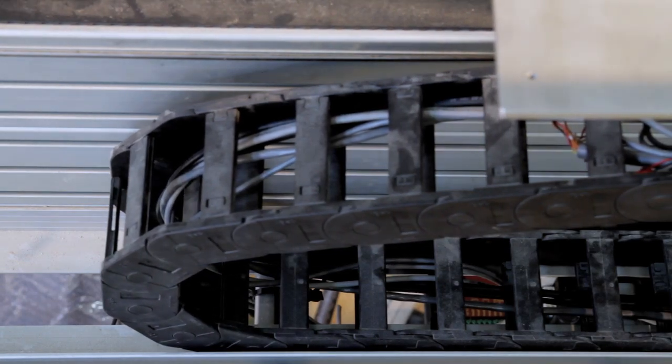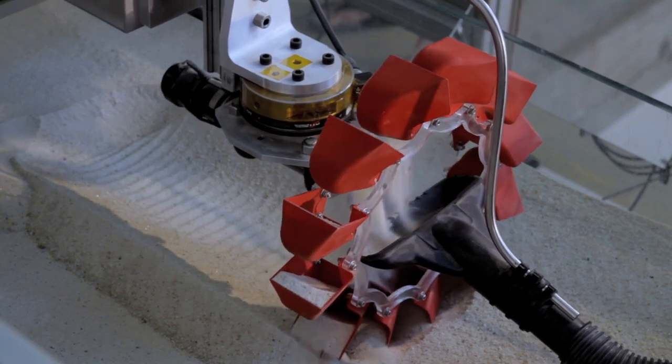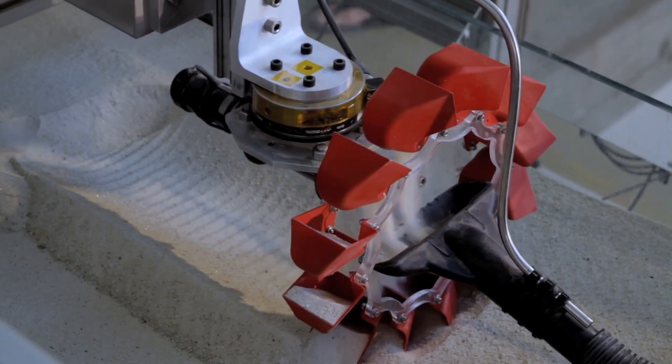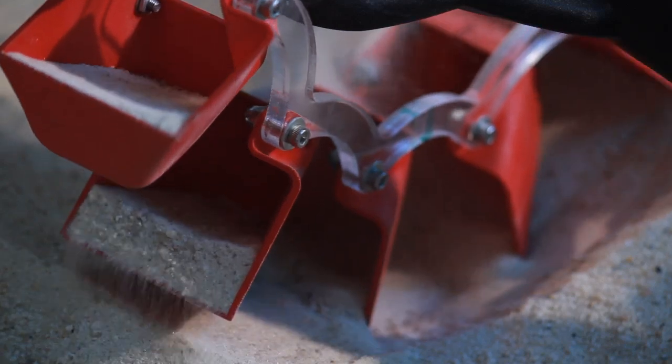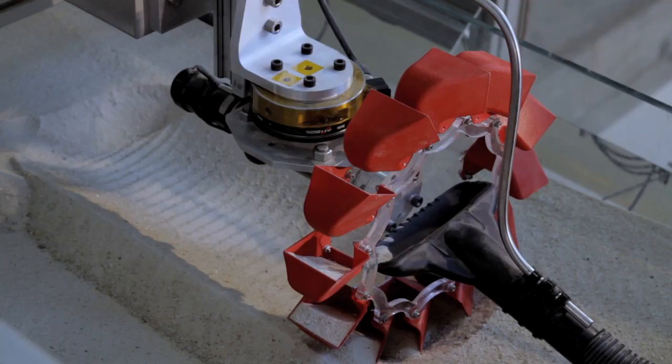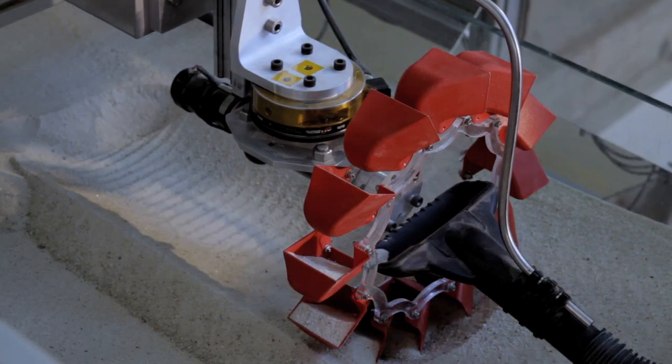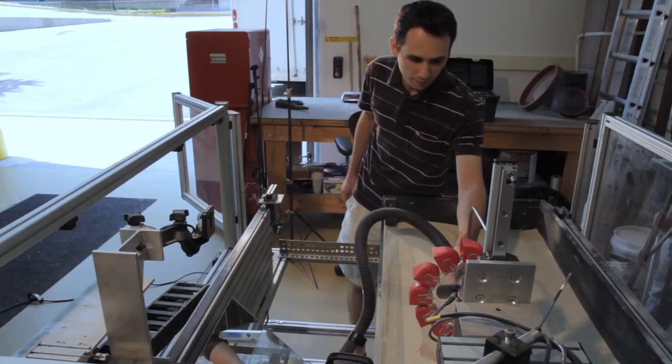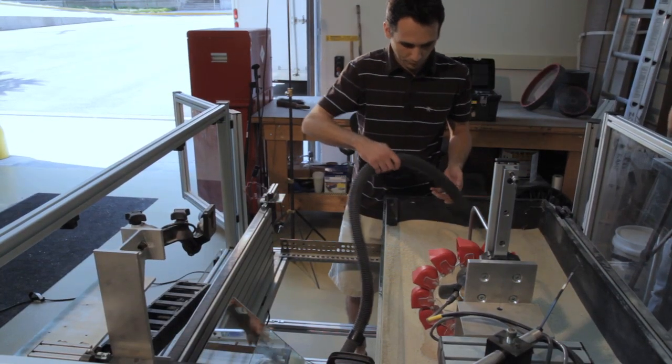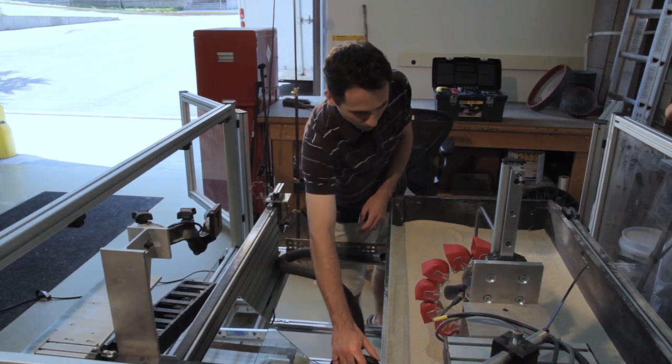And that weight is typically what excavators here on earth use to dig. They use it to develop the traction they need to move through the material and they use it to create the forces to really push their tools into the ground and pick up that material. We don't have the luxury of just being able to build a bigger robot and have a lot more weight for doing the digging tasks on the moon. And that requires a radical rethink of how we actually pick up this material, how we interact with it and collect it and deliver it.